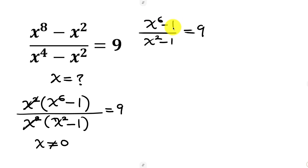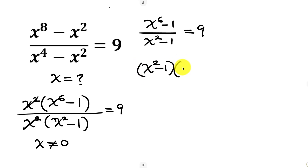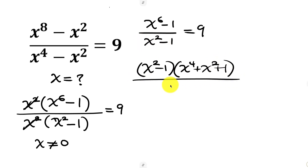Now notice that x to the power of 6 minus 1 is not random — it is a difference of squares, which can be expressed as x squared minus 1, times x to the power of 4 plus x to the power of 2 plus 1, all over the denominator x squared minus 1, and this is equal to 9.